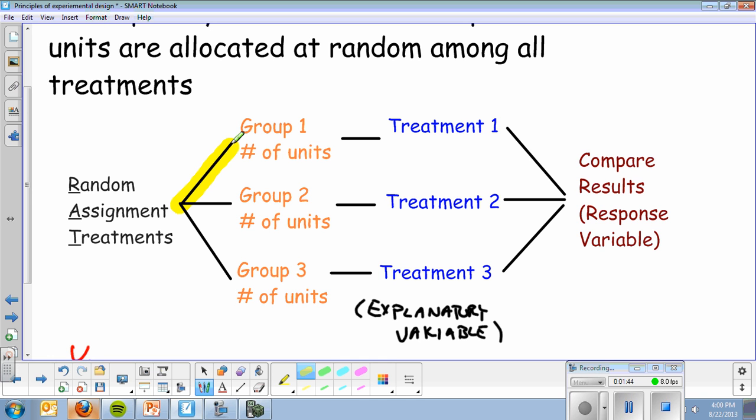Then you're going to take your experimental units and randomly assign them to the two treatments. You're going to randomly pick some, and they will be group one. Then you're going to pick some more, and they'll be group two. And then your leftovers will be group three. Group one gets treatment one, group two gets treatment two, group three gets treatment three.